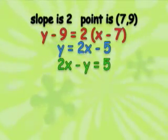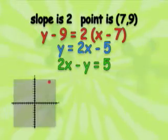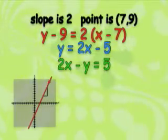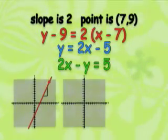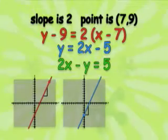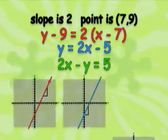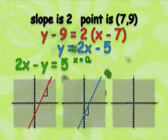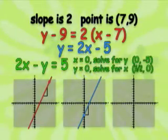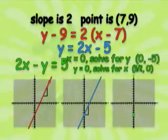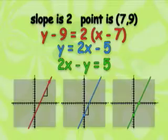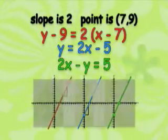If we graph this equation using the point-slope form, plot the point 7, 9, then draw a line with a slope of 2 through the point. If we graph with the slope-intercept form, find the Y-intercept of negative 5, and draw a line with a slope of 2 through that point. And if we graph using standard form, set X equal to 0 and solve for Y, then set Y equal to 0 and solve for X. That gives us the two intercepts, 0 negative 5 and 5/2 0, and connect them. Notice, all three equations give us the same line.